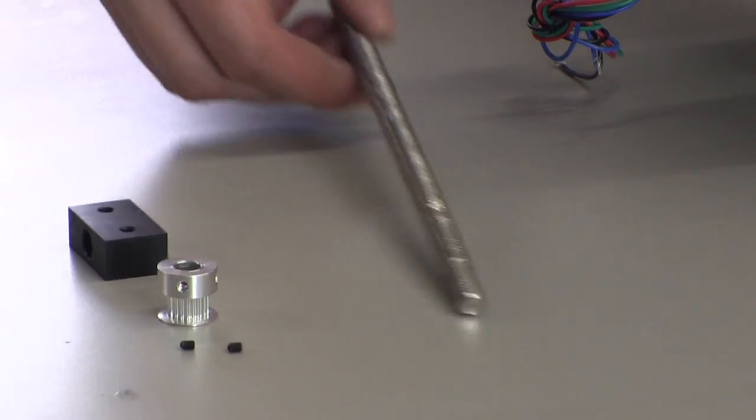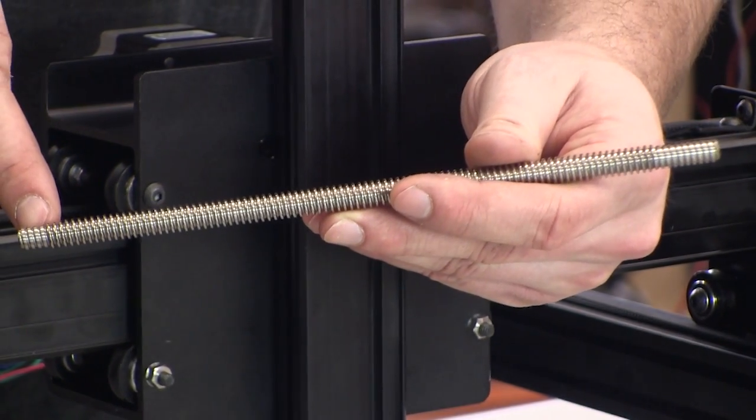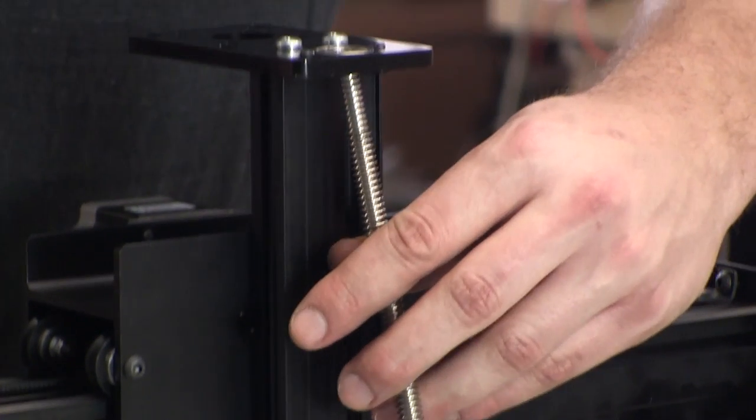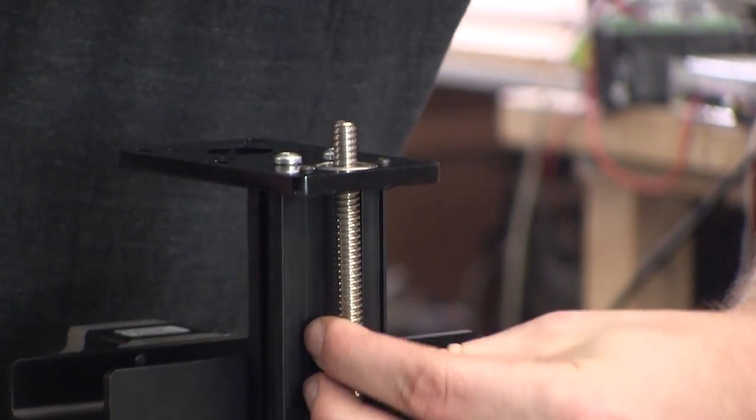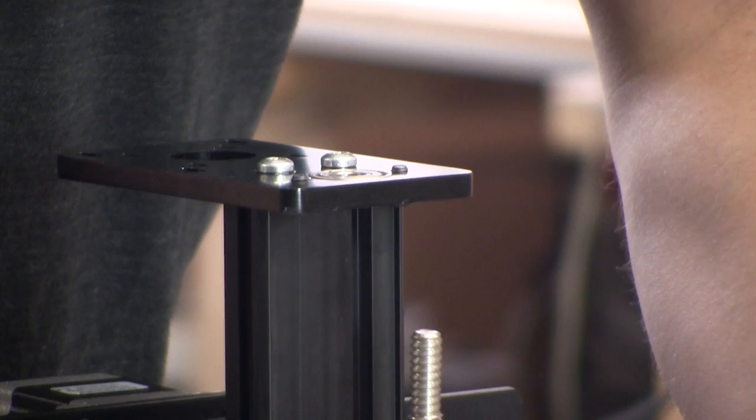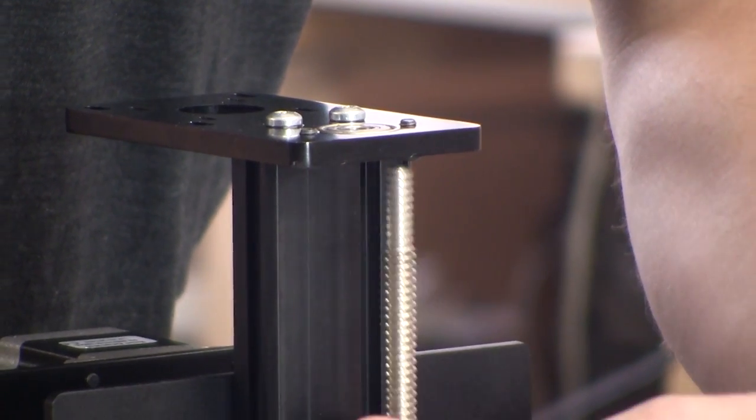Now we'll assemble the Acme rod portion of your X-Carve kit. You'll notice that the Acme rod has two sides. On one side, the threads start farther away from the end of the rod. That's the side that we'll be using.